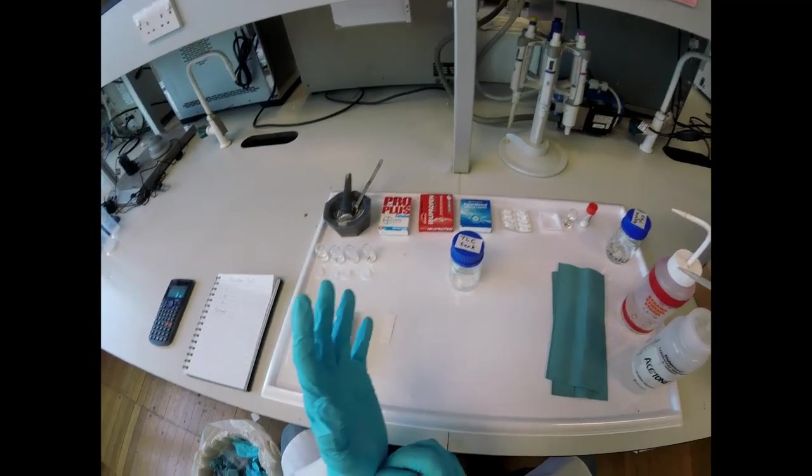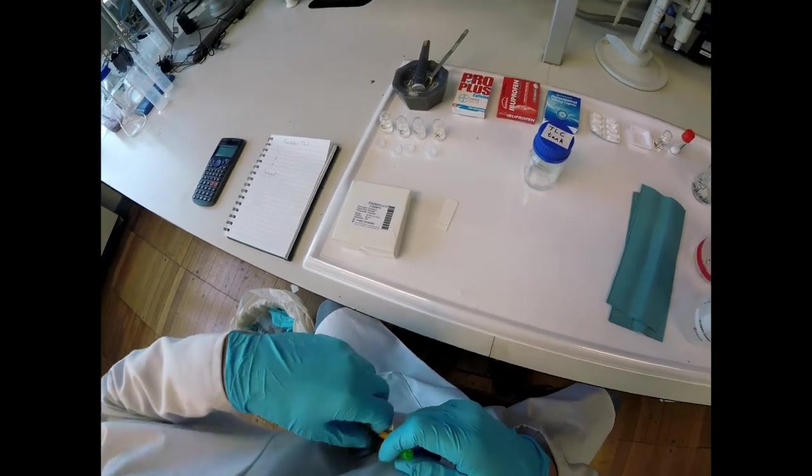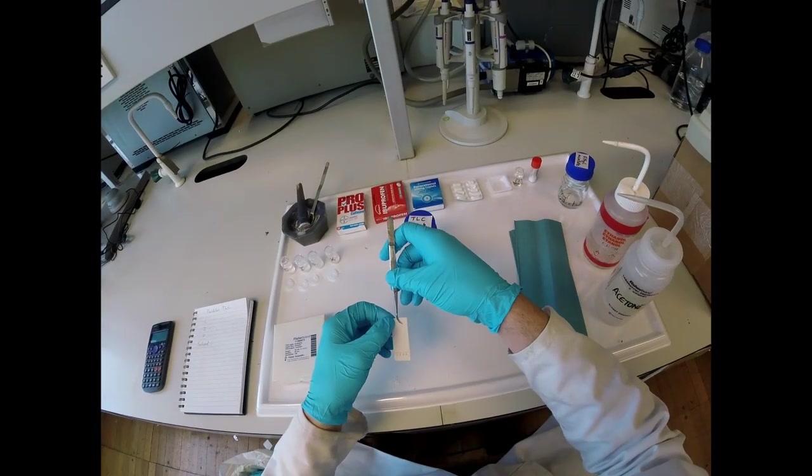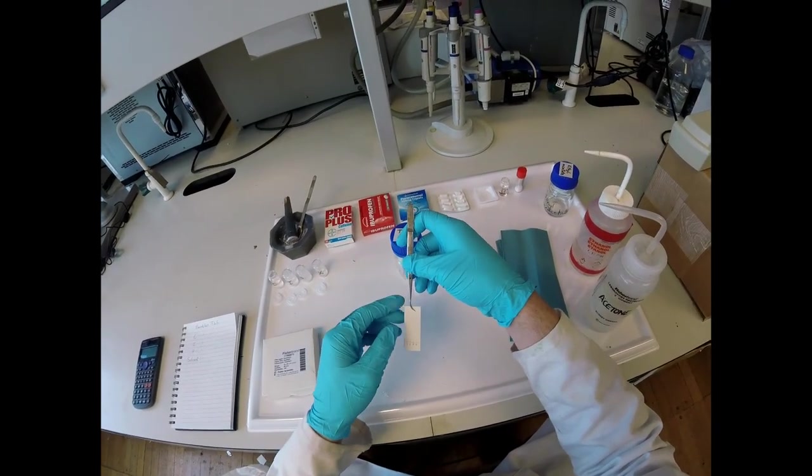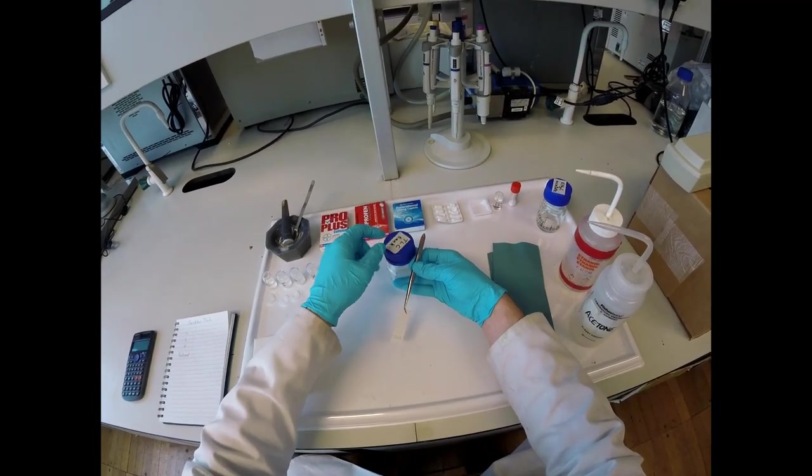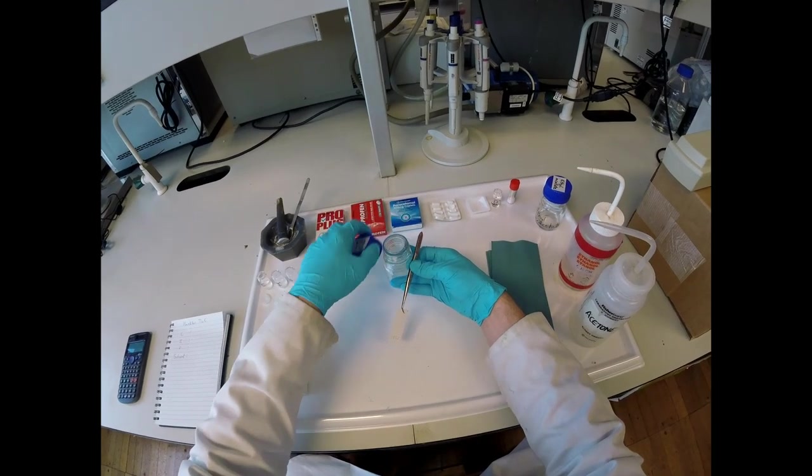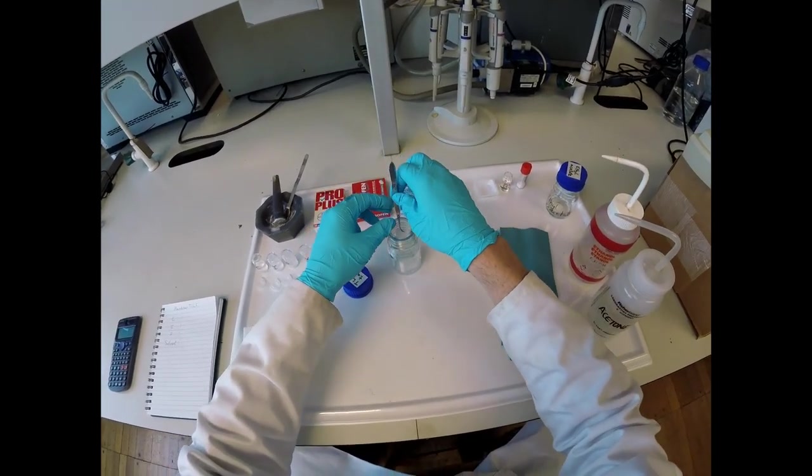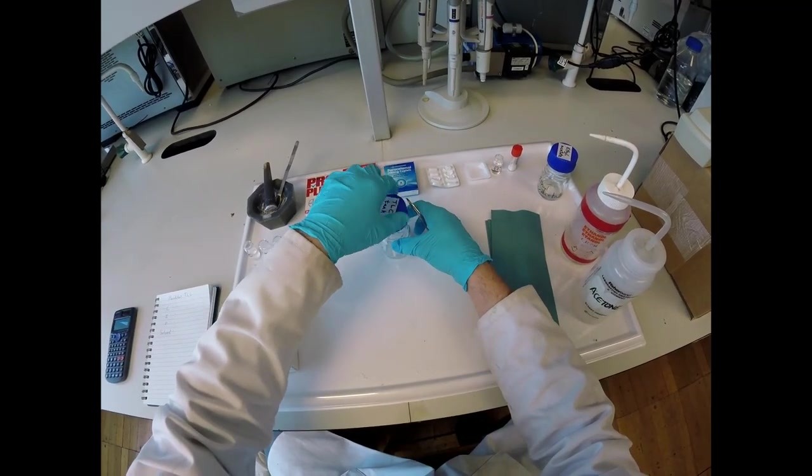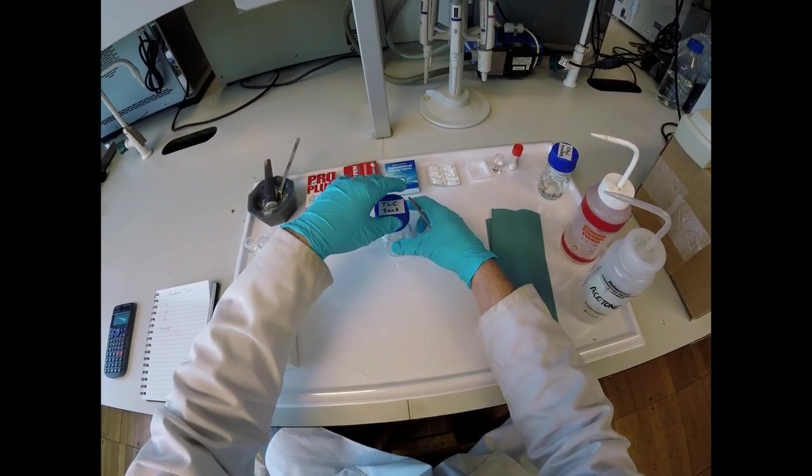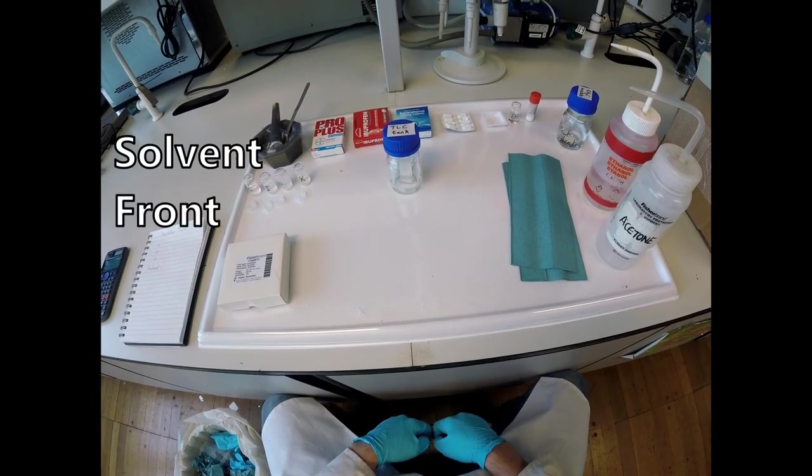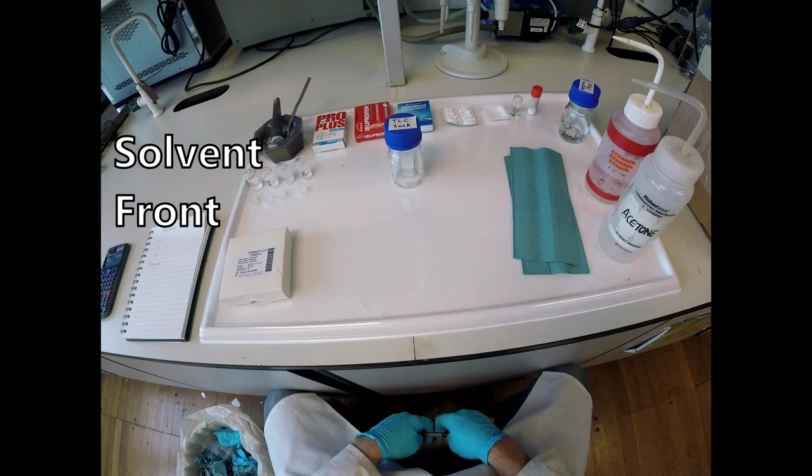Now I'm going to run the TLC. Take my tweezers, and with the plate I'm going to whip the lid off the tank and then as quickly as possible drop the plate in vertically. Replace the lid reasonably quickly, and now I want to leave that undisturbed until the solvent front reaches within a centimeter of the top of the plate.